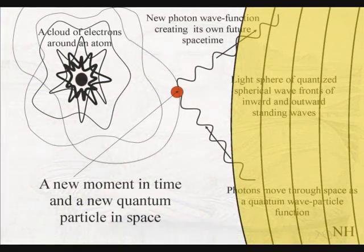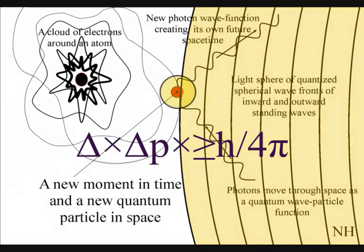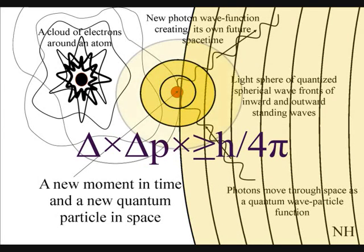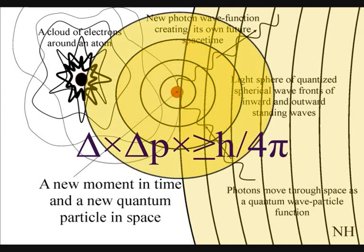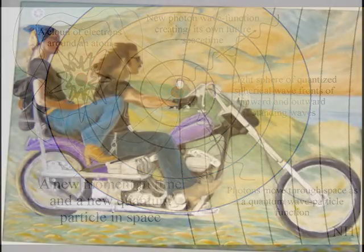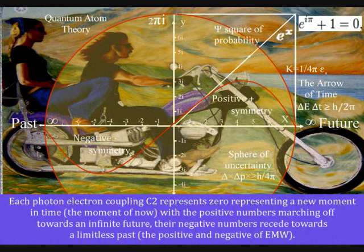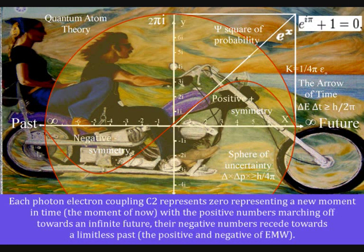With each new photon oscillation of light representing zero, representing a new moment in time, the moment of now, with the positive numbers marching off towards an infinite future, their negative numbers receding towards a limitless past—the positive and negative of electromagnetic waves.